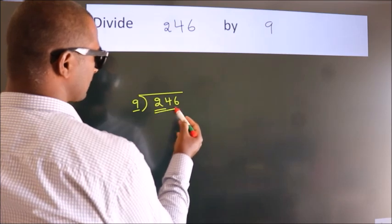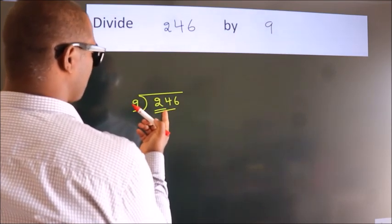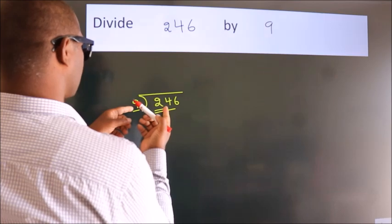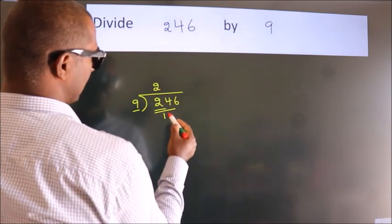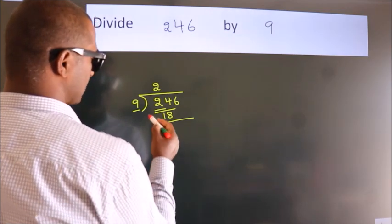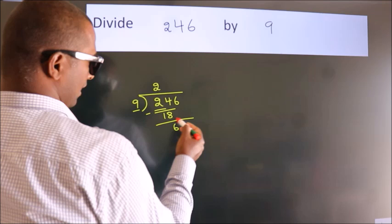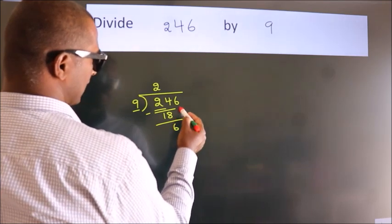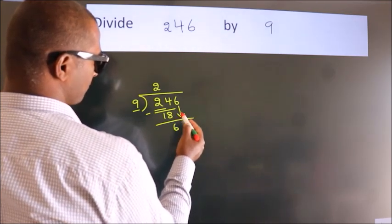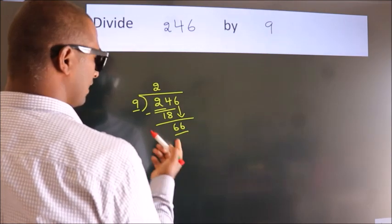24. A number close to 24 in nine table is nine twos, 18. Now we should subtract. We get six. After this, bring down the beside number, so six down. So 66.